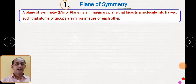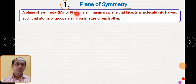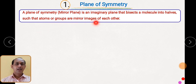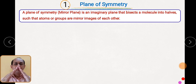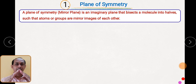We will see one by one what the symmetry elements are. First is the plane of symmetry. A plane of symmetry is a mirror plane which is basically imaginary, which bisects a molecule into two parts so that the atoms or groups are mirror images of each other.